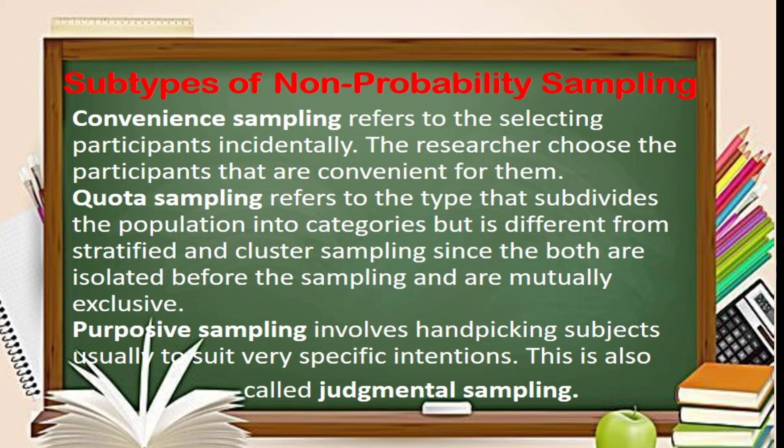In selecting the sample of a study, the following elements must be properly discussed: the total population and its parameters; the sample and its statistics; the sampling method with references to support it; an explanation and discussion of the sampling method; an explanation of how the sampling was done; an enumeration of the qualifying criteria; and the profiles of the subjects or respondents.